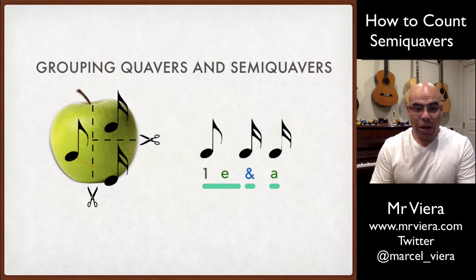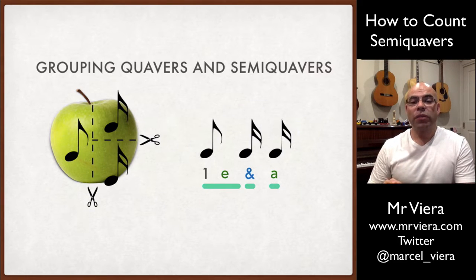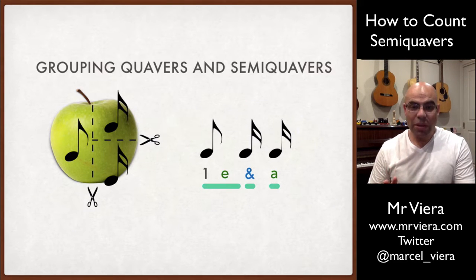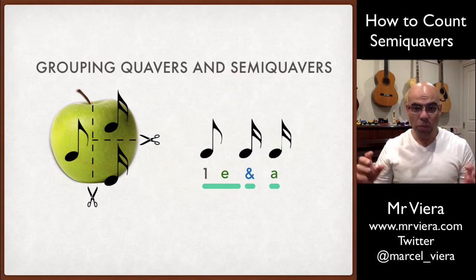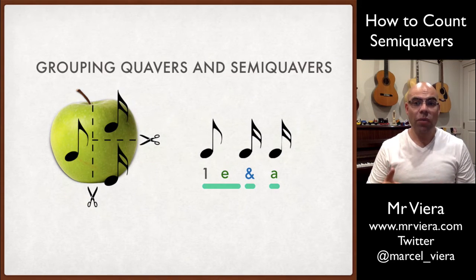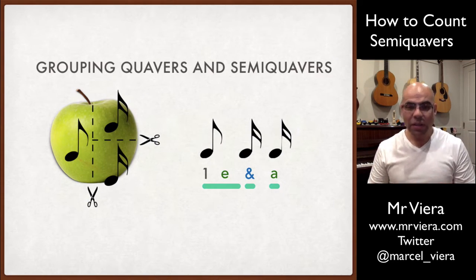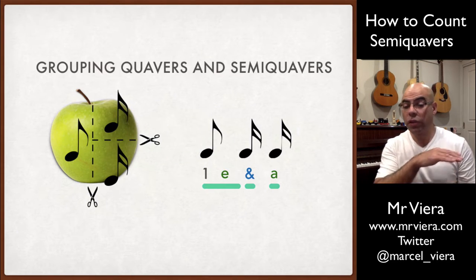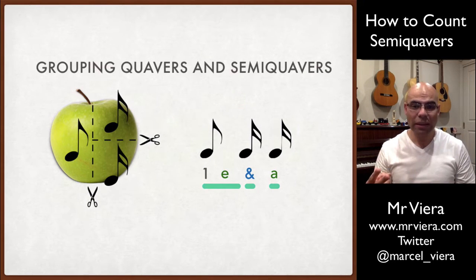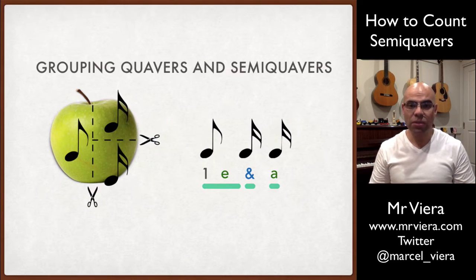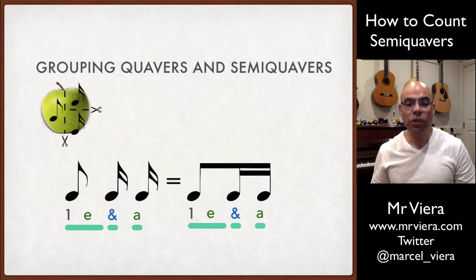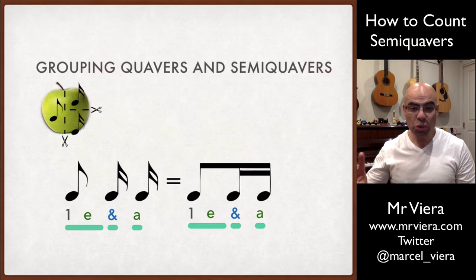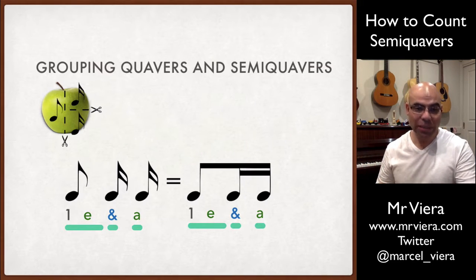We've got a single quaver with one flag, and we've got two semiquavers with two flags. The problem is that if we just draw a line to group all of them, then the one line represents that it's a quaver, but we've got some semiquavers. So if we draw a line over the top of both of them and beam them together with two lines, they all turn into semiquavers. The way we write this musically is we use one beam for the part that belongs to the quaver, and two beams for the two notes that belong to the semiquavers.